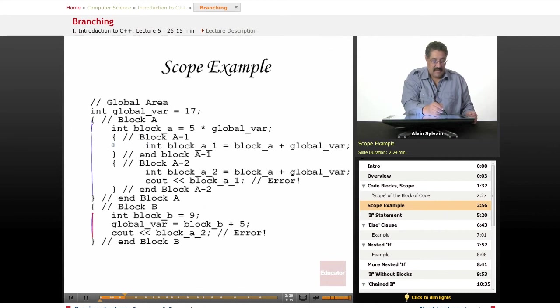Inside this block we have another block, block A-1, which can also see block_a and it can see the global variable. And then we have block A-2 which is also inside block A and it can see the block_a variable which is global to block A but not global to the program. And the global_var which is actually global to the entire program, but it cannot see block A-1's variable. That's in a different block.